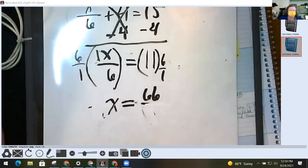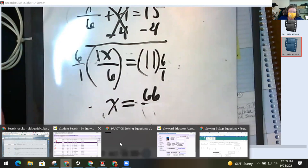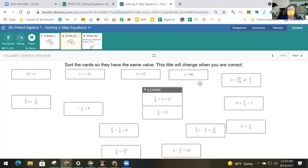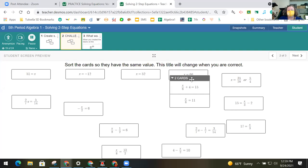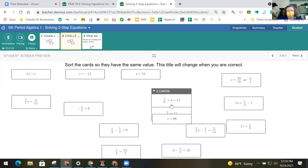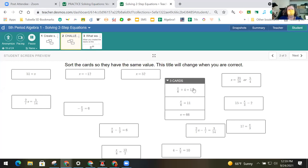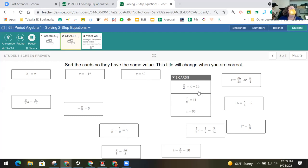So then when I go back to my screen, I now want to put these two cards with this x equals sixty-six. And I even put it at the bottom, because really this is the whole problem in order. This is where I started. This was my next step. This was my final step.